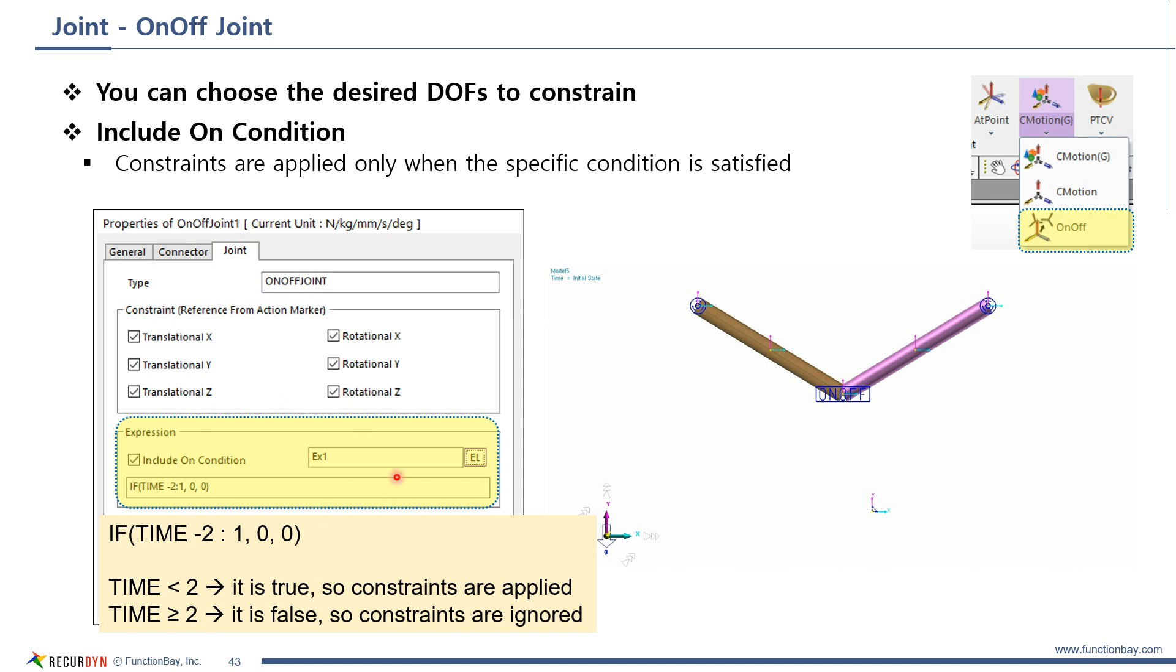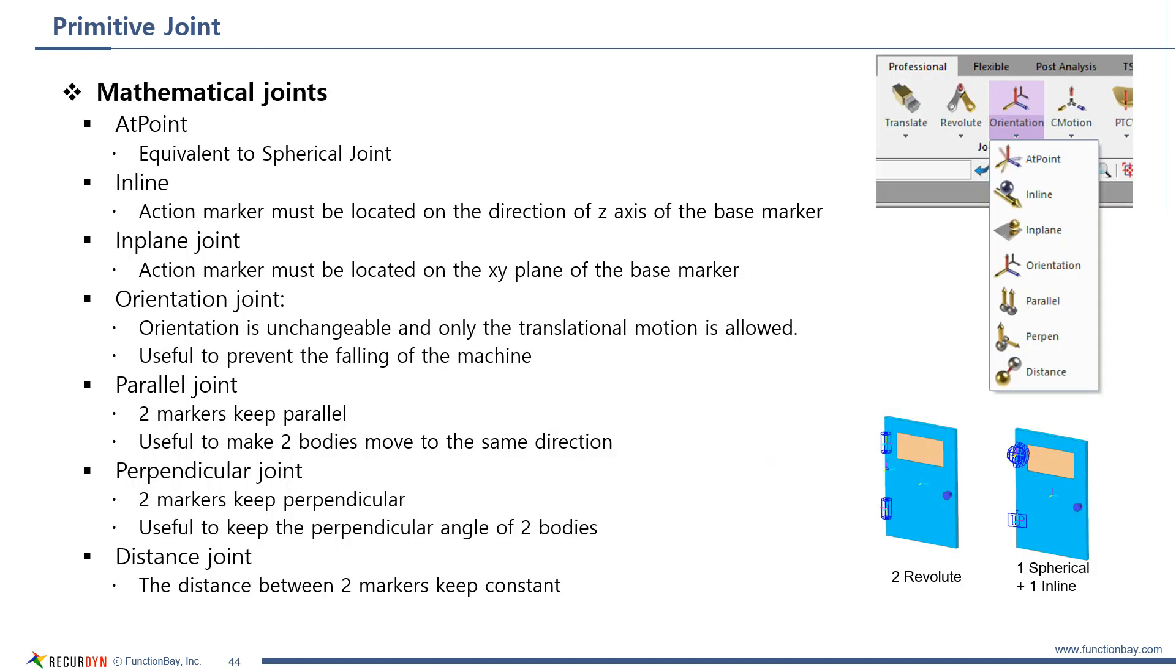As you can see, until time is 2 seconds, two bodies are connected as if a fixed joint is connected to them. Then, they fall as if there is no joint. Please see.